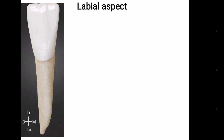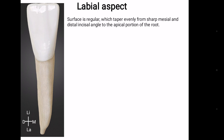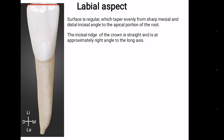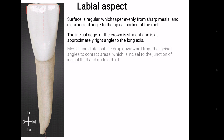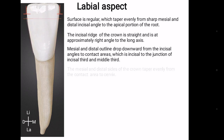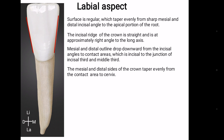Labial aspect — that is the surface of the tooth which is towards the lip. The surface is regular, tapering evenly from sharp mesial and distal incisal angles to the apical portion of the root. The incisal ridge of the crown is straight and is at an approximate right angle to the long axis. Mesial and distal outline drop downward from the incisal angle to the contact area, which is incisal to the junction of the incisal third and middle third. The mesial and distal sides of the crown taper evenly from the contact area to the cervix.